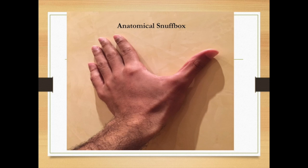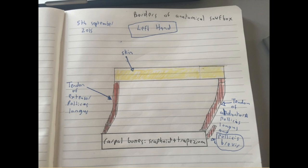The anatomical snuffbox, also known as the radial fossa, is a triangular depression located at the lateral aspect of the dorsum of the hand. It is mainly seen when the thumb is abducted. Long ago, this fossa was actually used to hold ground tobacco, which was inhaled through the nose — that is why it is called the snuffbox. This is my sketch.